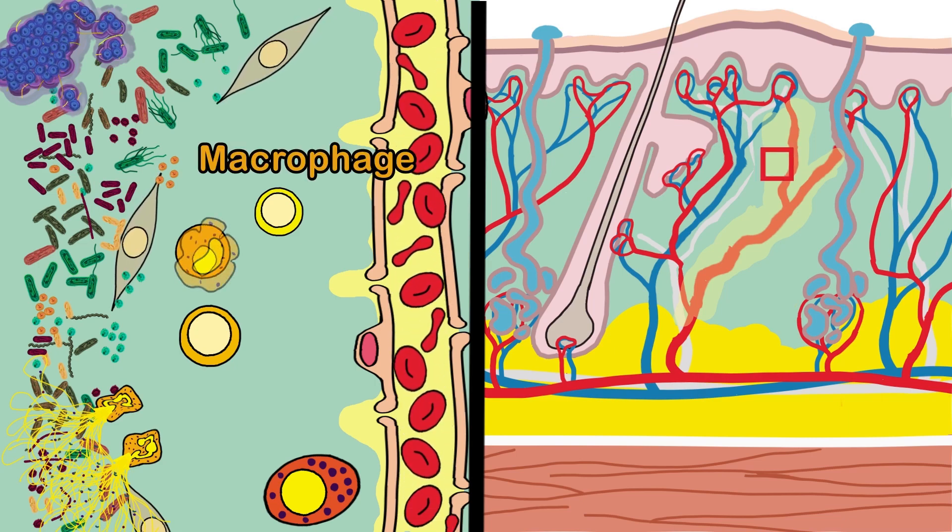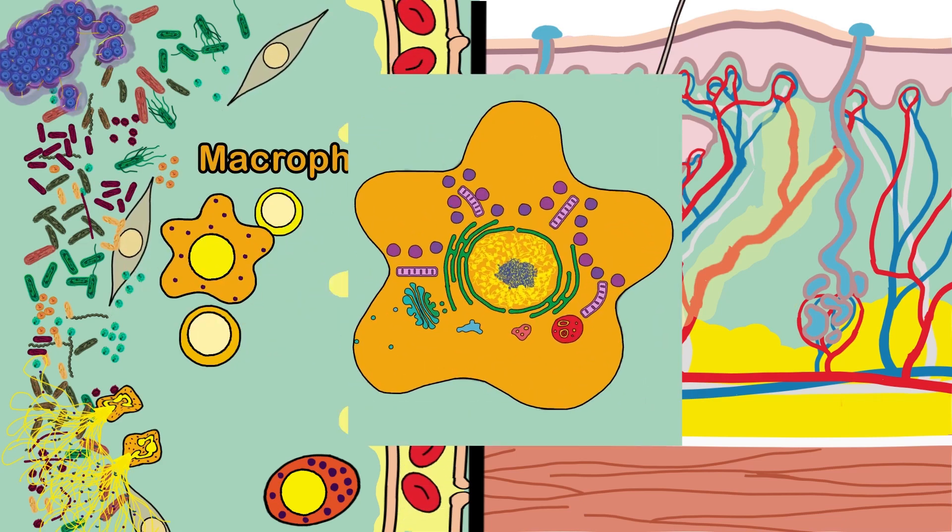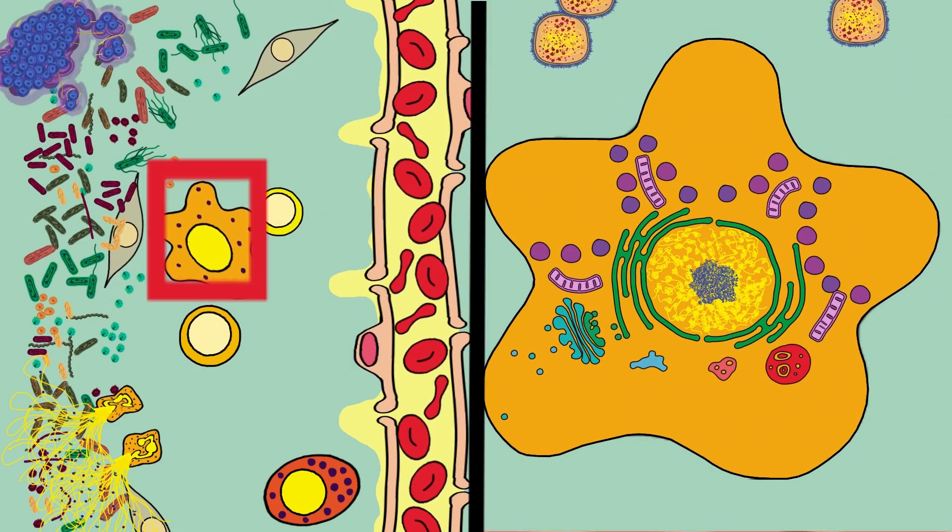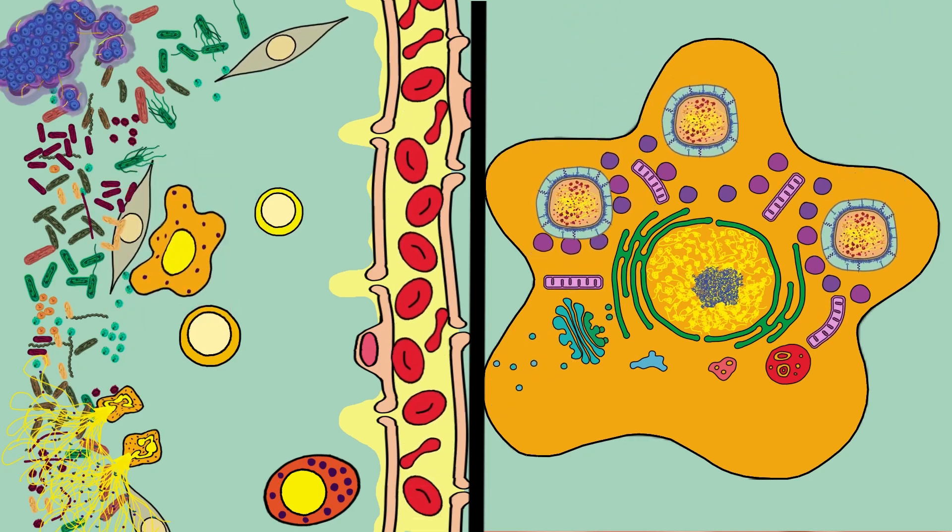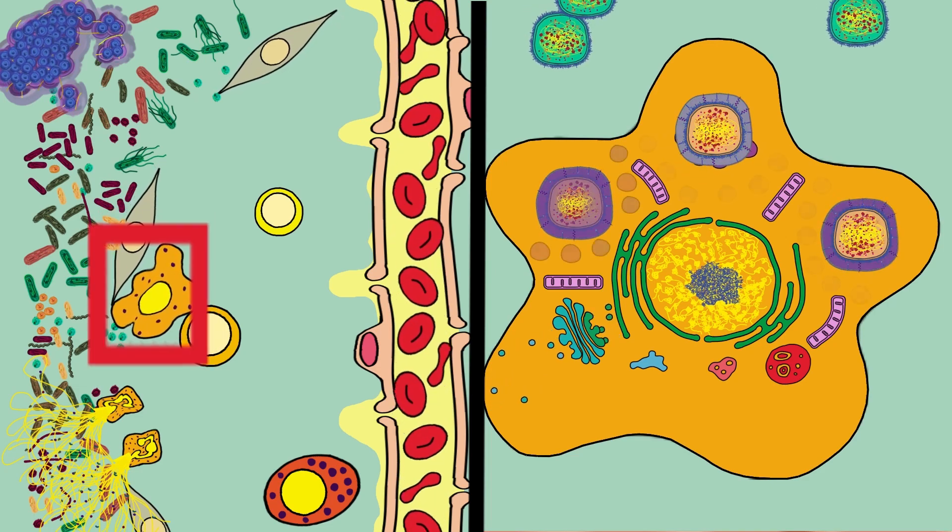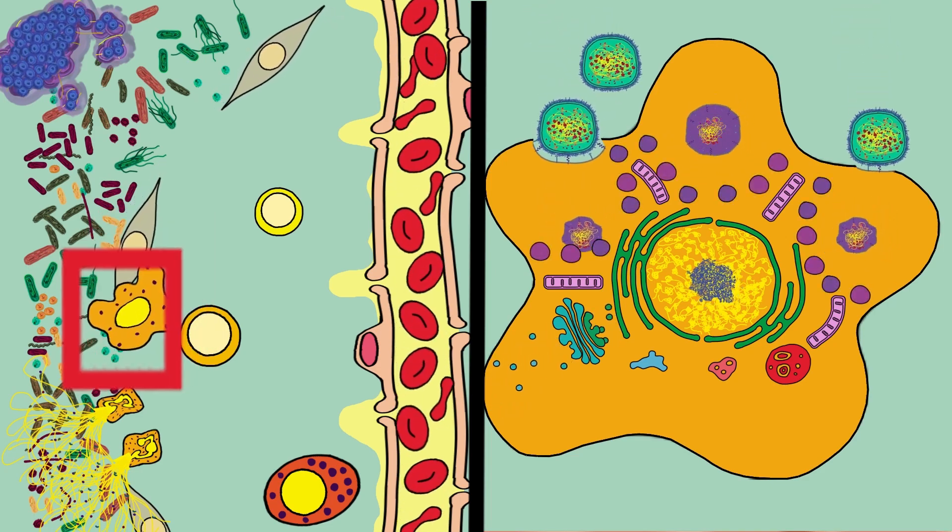Monocytes start to differentiate into macrophages. This bigger cell can eat a larger amount of bacteria than other phagocyte cells, but can also release cytokines and chemokines that recruit more phagocytes to help in battle, inducing more inflammation in the injured site.